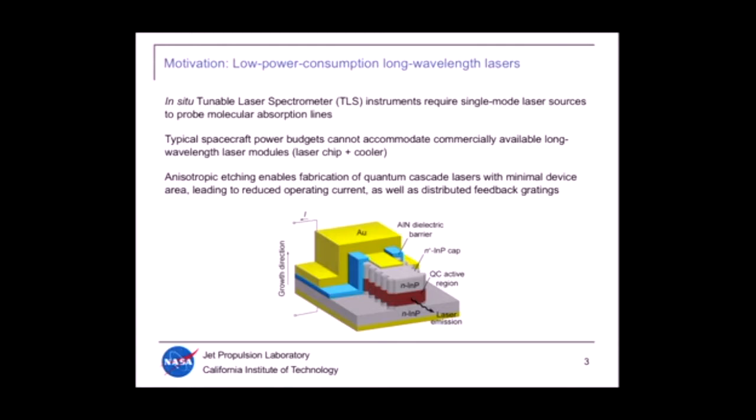So the motivation for our work is to develop low power consumption long wavelength semiconductor laser sources for a class of instruments we call tunable laser spectrometers or TLS instruments. They're in-situ instruments that we want to bring to planetary atmospheres to do measurements of abundance and isotopic composition of atmospheric molecules. But because these are on spacecraft, power budgets are limited. So when you move to longer wavelengths, even with relatively low power semiconductor laser technologies, commercially available devices consume too much power, especially when you consider the laser chip plus the cooler needed to maintain operating temperature.